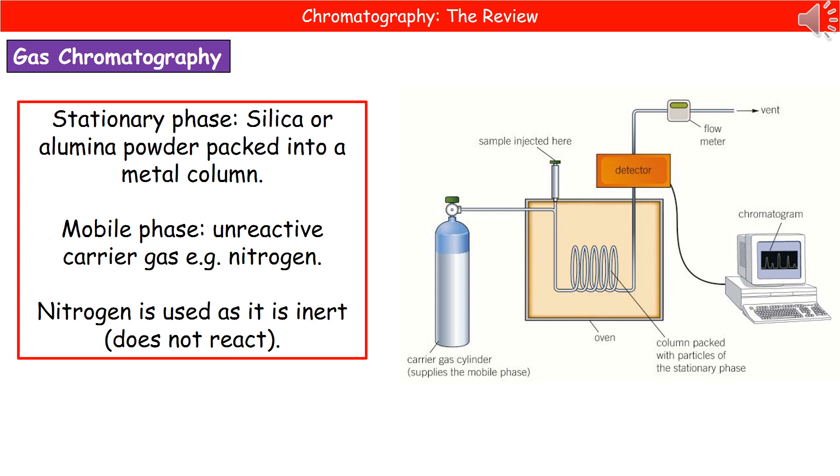If you look at the diagram on the right, you can see we've got our carrier gas cylinder on the left hand side of it. You've got your little sample injection point. Then you've got the column packed with the particles of our stationary phase, which will be the silica or alumina powder. And then it passes up through the detector, which is connected onto a computer. And that's where we're going to see our end result of the chromatogram being produced.